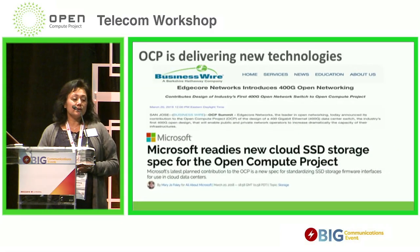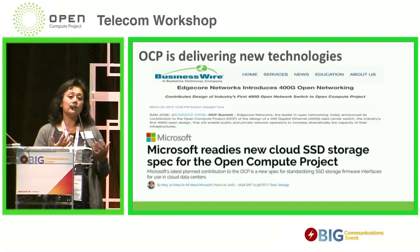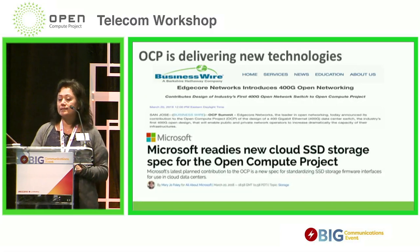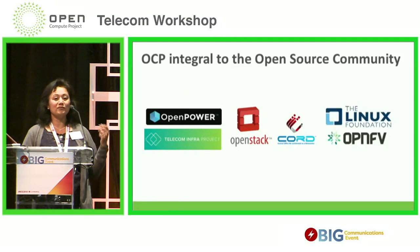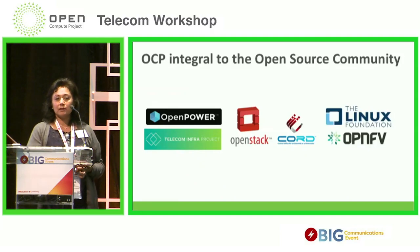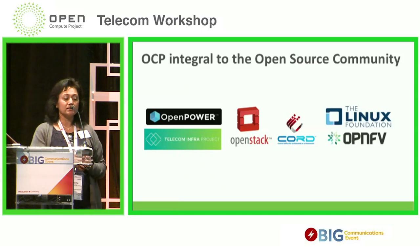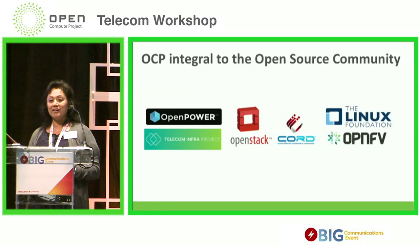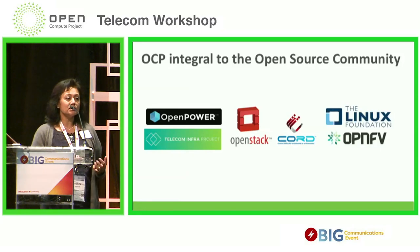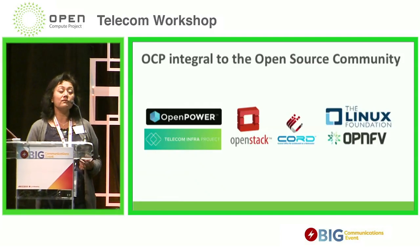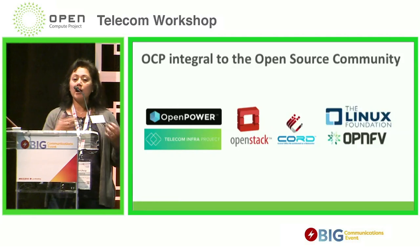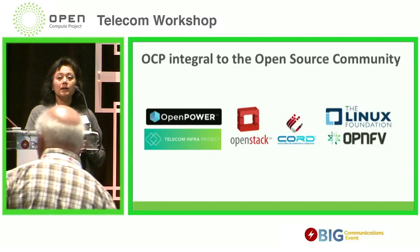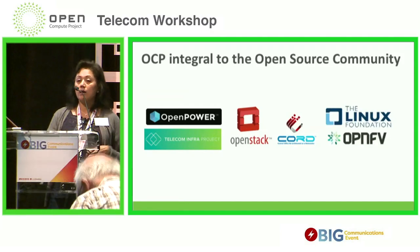Some new technologies announced at our summit: EdgeCore Networks announced their 400 gigabit optical networking product, and Microsoft announced Project Olympus looking at SSD cloud storage. We also work closely with CORD, the Linux Foundation, the Telco Infra Project that Facebook started, OpenStack, and OpenPower — making sure the hardware our project communities work on is synced with the software and solutions our sister organizations are working on.